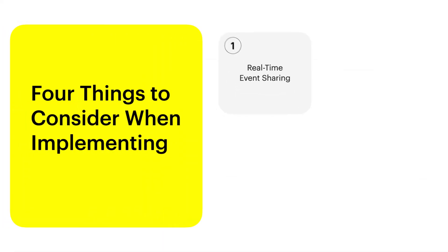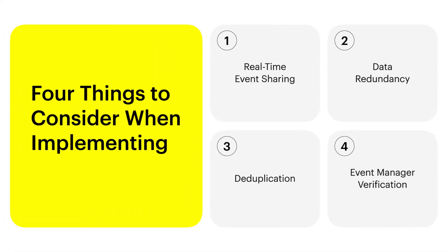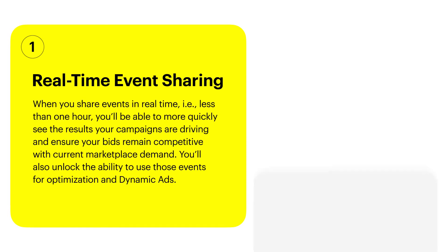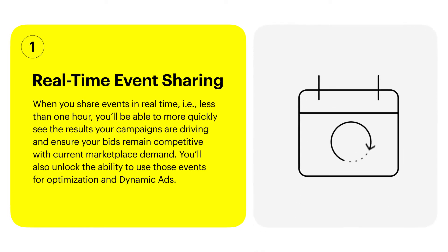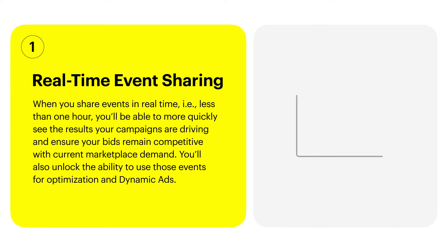Next, we'll cover some of our best practices for improving measurement and performance using the Conversions API. Share events in real-time. When you share events in real-time, meaning within one hour or less, you see results quickly, allowing you to monitor your bids and adjust accordingly to stay competitive in the Snapchat ad auction. It also unlocks additional advanced targeting and campaign optimization opportunities.